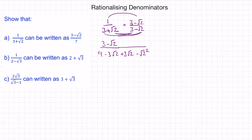Now we can tidy this up, because the negative 3 root 2 will cancel with the positive 3 root 2 to make 0. And the square root will cancel with the squared to make just 2. So now we have 3 minus root 2 on our numerator, and then 9 take away 2 is 7. So now we have 3 minus root 2, all over 7.